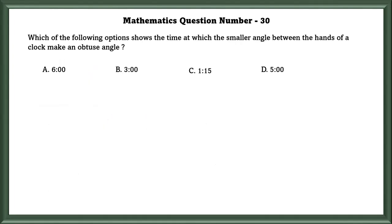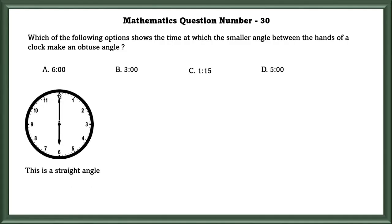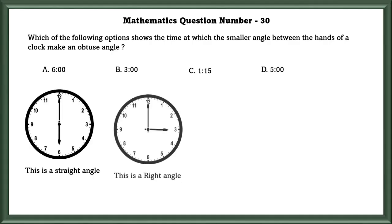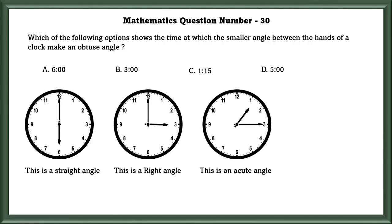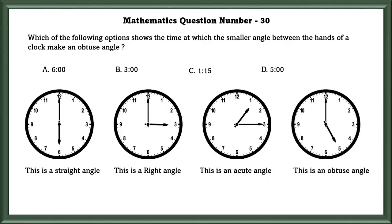Mathematics question number 30: Which option shows the time at which the smaller angle between the hands of a clock makes an obtuse angle? Option A, 6 o'clock, makes a straight angle. Option B, 3 o'clock, makes a right angle. Option C, 1:15, makes an acute angle. Option D, 5 o'clock, makes an obtuse angle — so the answer is D.